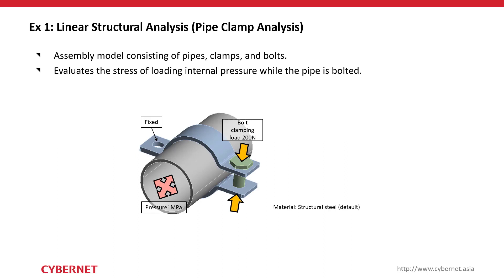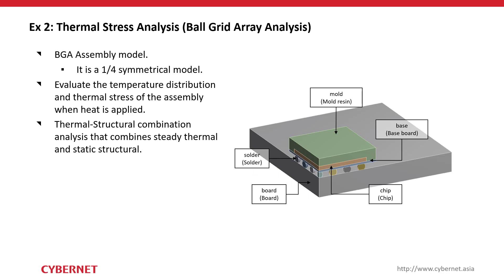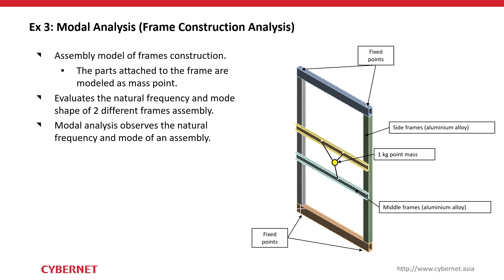We have three demonstrations prepared. First is a simple linear structural analysis — a pipe clamp analysis where we apply bolt preload forces and internal pipe pressure, then observe stresses and deformation. Second is a thermal stress analysis of a ball grid array (BGA) where we apply thermal boundary conditions and evaluate stresses. Third is modal analysis to evaluate natural frequency and mode shapes of a frame structure by varying its geometry.